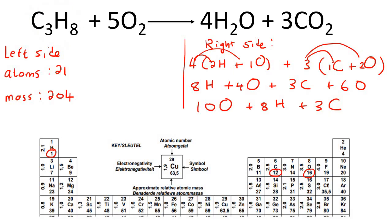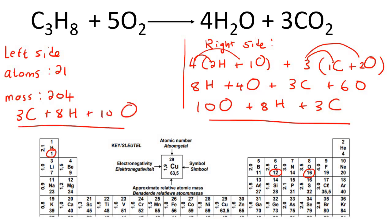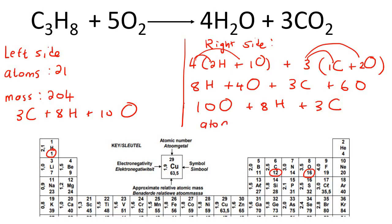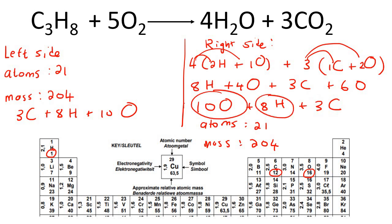Now if we just come back to what we had here — we had three carbons, eight hydrogens, and 10 oxygens. Can you see it is exactly the same on both sides? How amazing is that! The next thing I want to quickly work out is the mass. So the number of atoms would be 21, same as over here. And then if we had to go work out the mass, it would also be exactly 204, because we also have 10 oxygens, eight hydrogens, and three carbons.